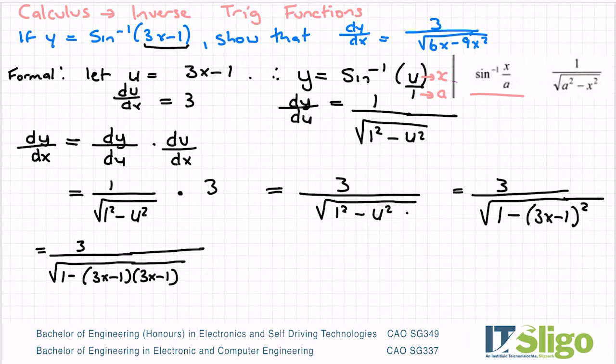So it's equal to 3 over the square root of 1 minus. So 3x by 3x is 9x squared. 3x by minus 1 is minus 3x. Minus 1 by 3x is minus 3x. And then minus 1 by minus 1 is plus 1.